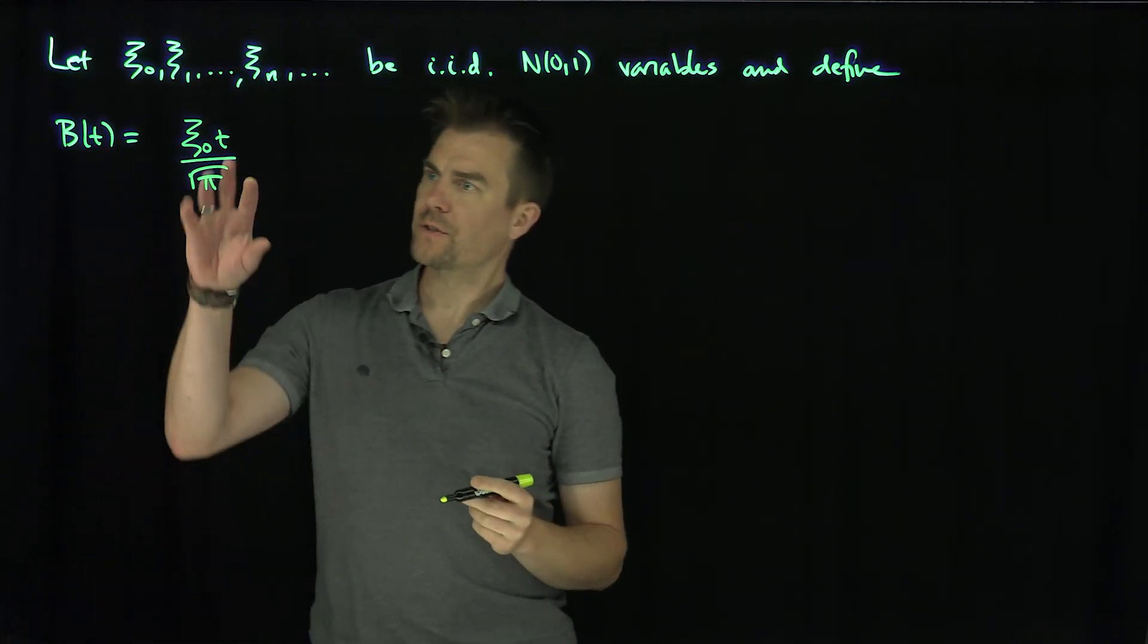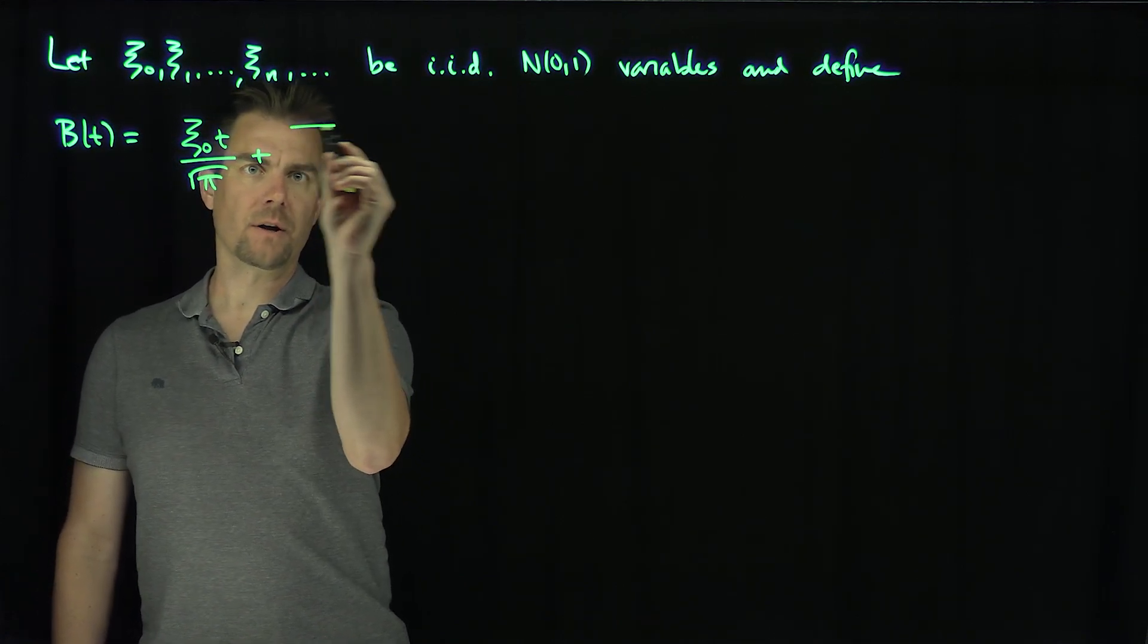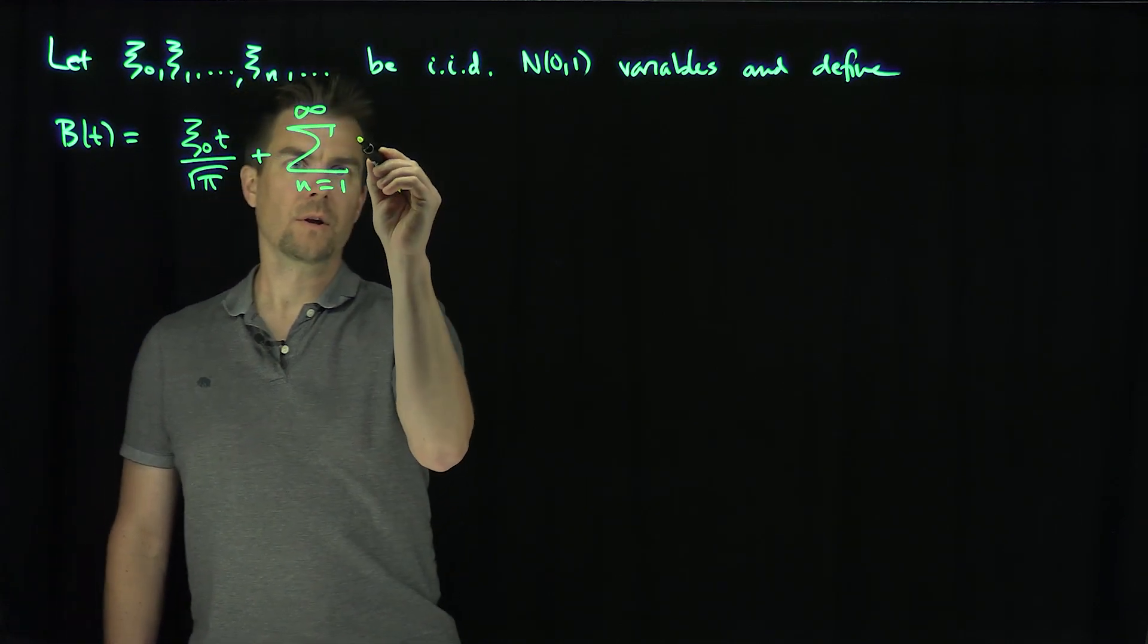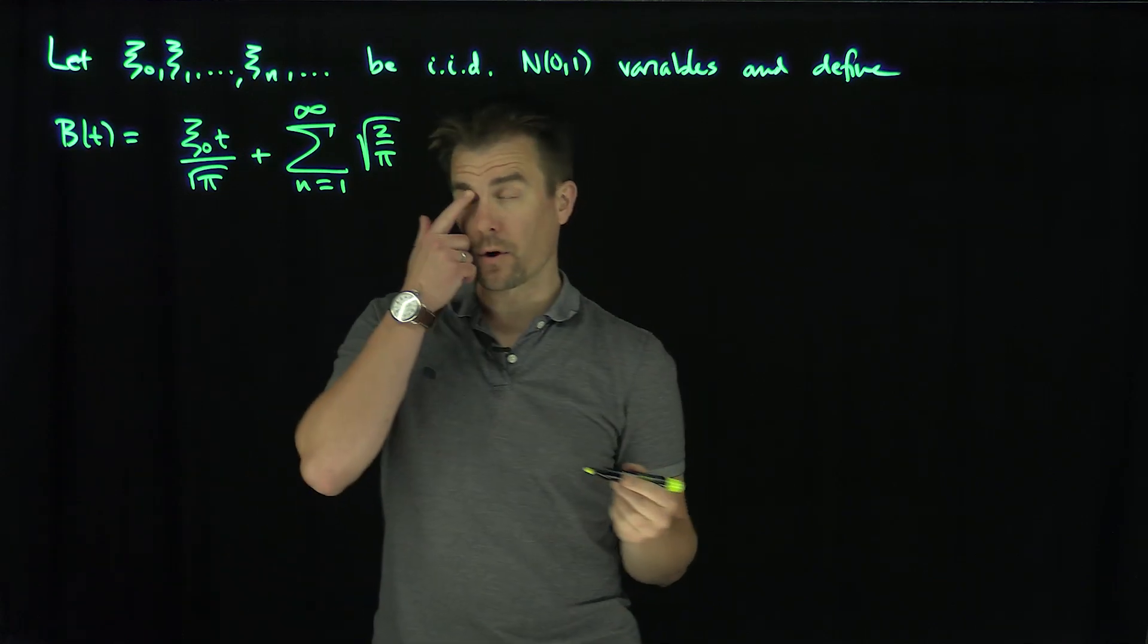So that's just a nice continuous function over here, t, plus now I'm going to add in an infinite number of terms, n goes from 1 to infinity, the square root of 2 over π, just these are normalization factors that I need in my Fourier coefficients.